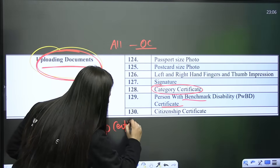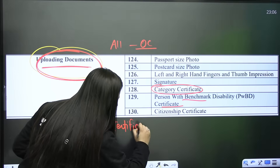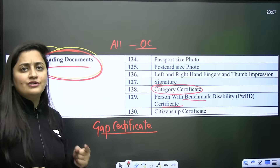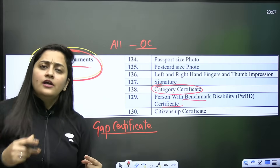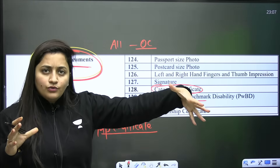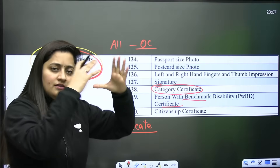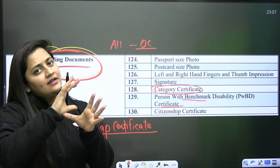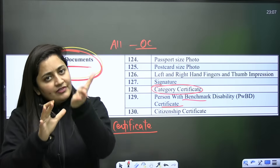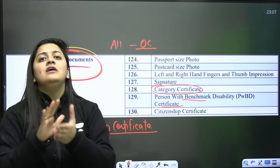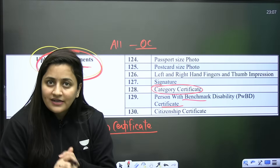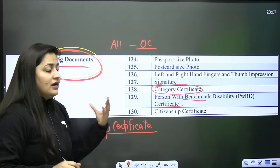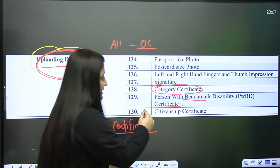For the gap certificate, you need an affidavit — for example, if after Class 12 you took coaching, you go to the government office, the affidavit will be prepared with all details, and you'll have that official document. As of now for uploading, this is what you need.